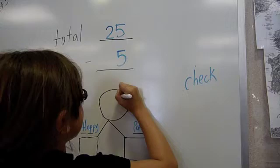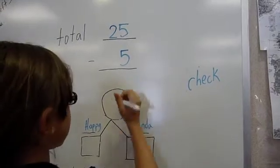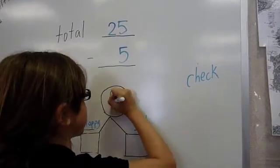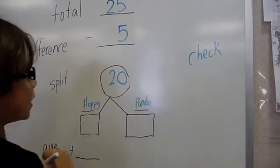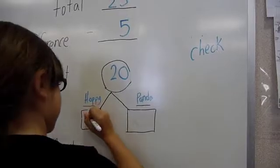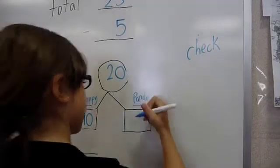5 take away 5 is 0, and 2 take away 0 is just 2. And now we're going to split it. For 20, if you want to split it, it's 10 and 10.